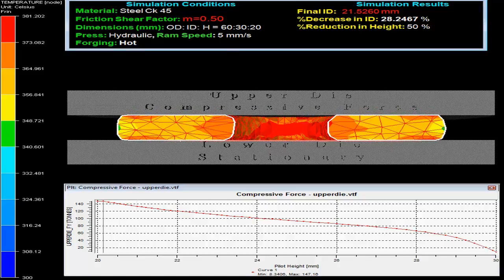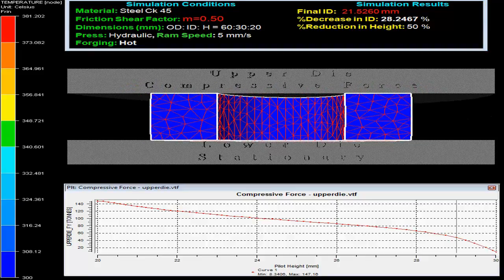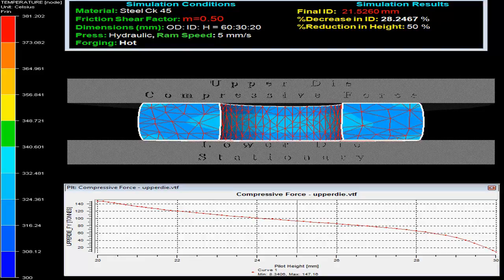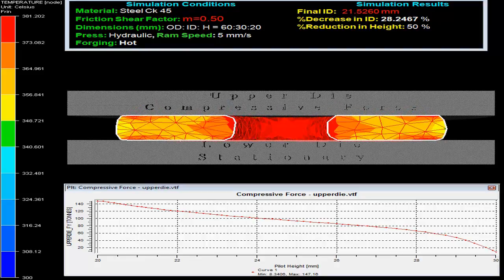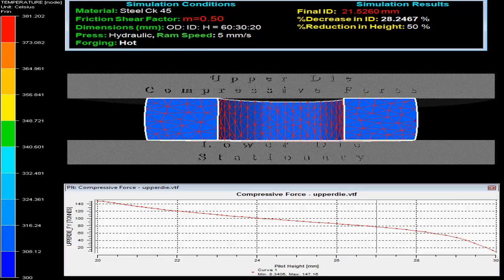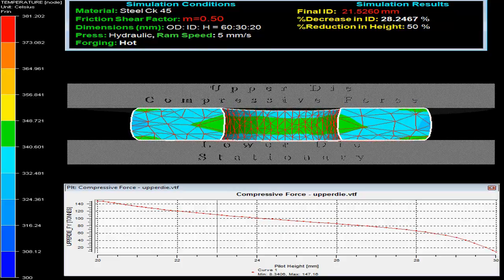On the top right side, simulation results show the final inner diameter is 21.5 mm with decrease in inner diameter by 28.2% on 50% reduction in height.